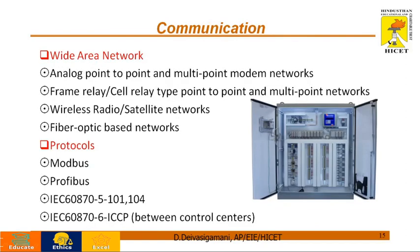The communication in SCADA is established with the help of WAN as well as all modern protocols. WAN is a specialized device used for analog point-to-point as well as multipoint communications. Wireless satellite devices can also be used. Fiber optic cables are used for better communication. Modern protocols used in SCADA applications include Modbus, Profibus, and IEC — these are dedicated protocols commonly used in process industries for better communication networks.